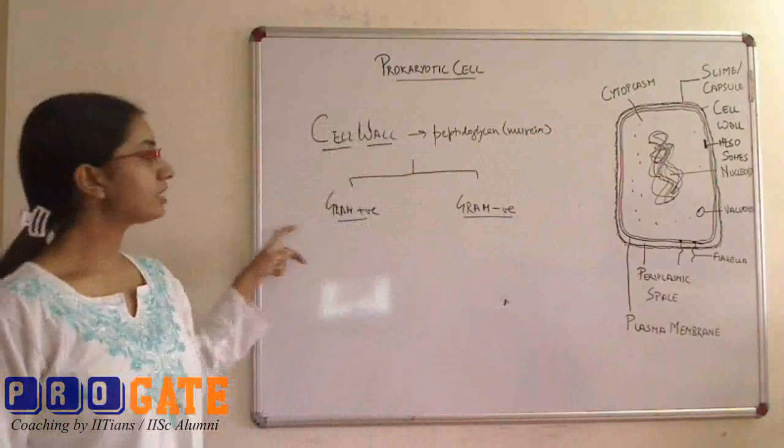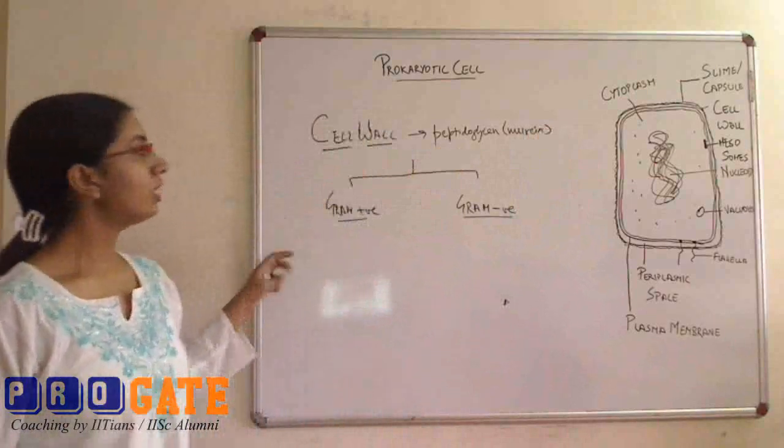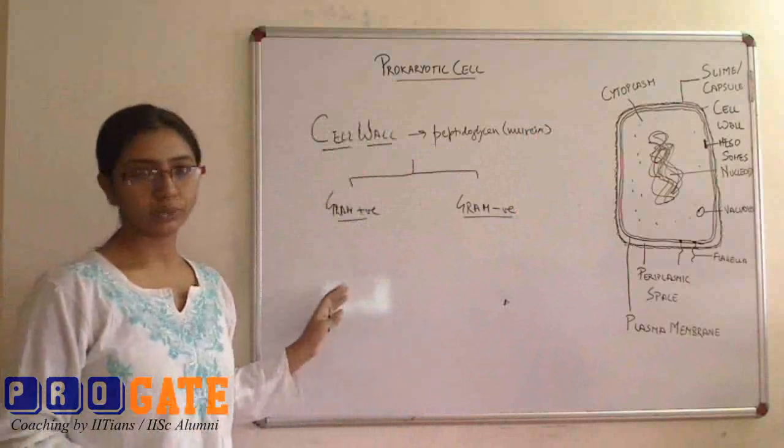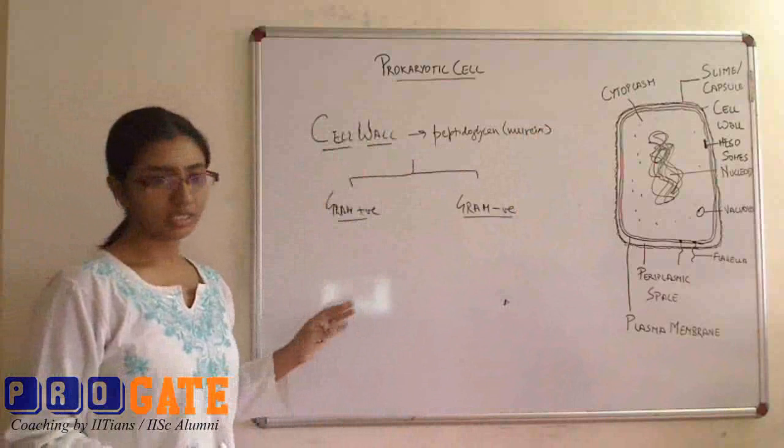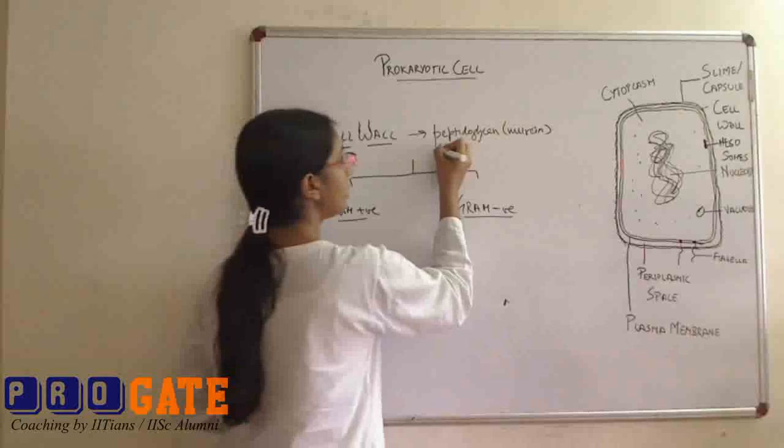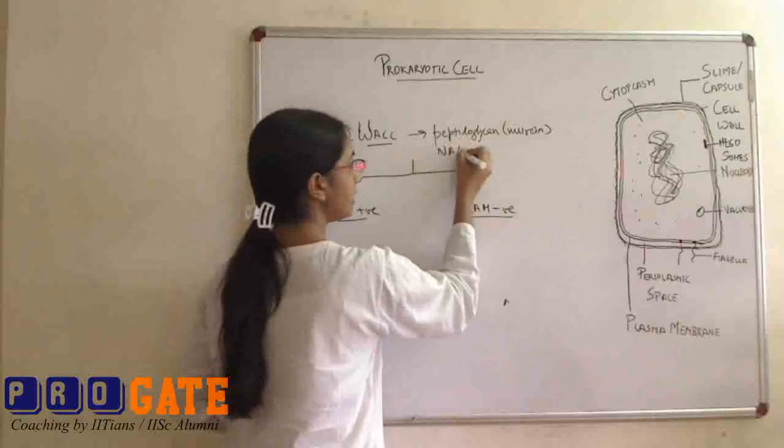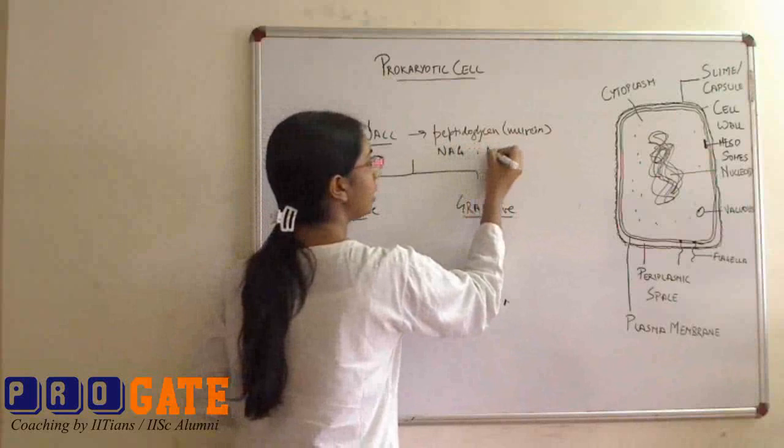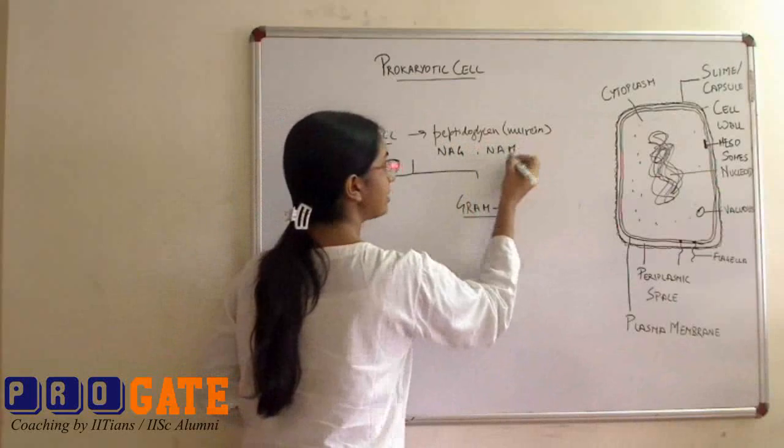So what happens is gram-positive bacteria cell wall is primarily consisting of just the peptidoglycan units cross-linking between each other. So what is the peptidoglycan? The peptidoglycan consists of N-acetyl glucosamine, that is NAG, and N-acetyl muramic acid, that is NAM.